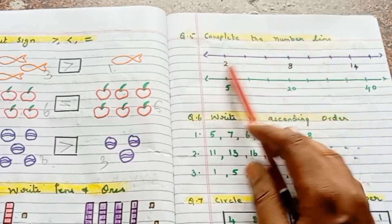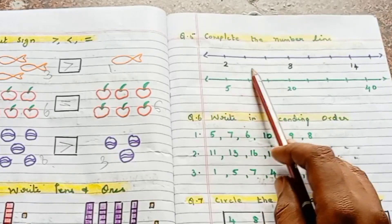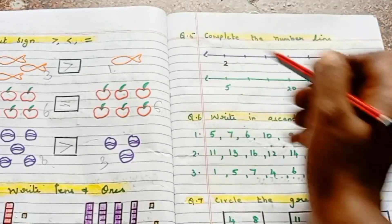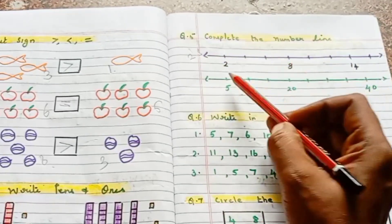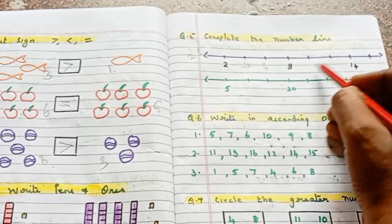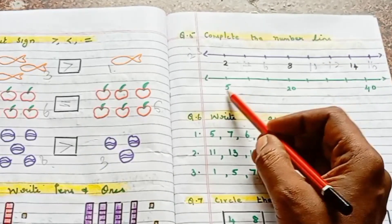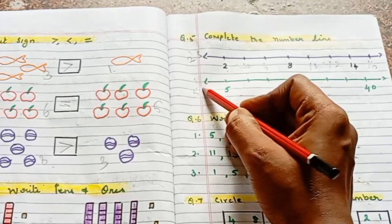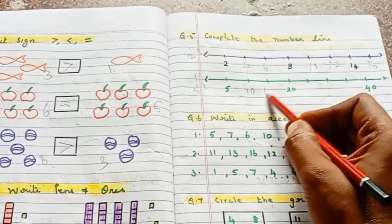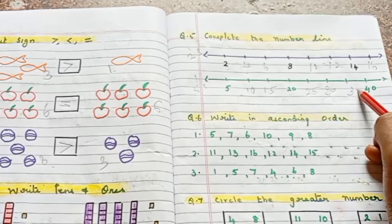Next question: Complete the number line — skip counting. Some numbers are missing on the number line. First scale: skip counting of 2 — 2, 4, 6, 8, 10, 12, 14, 16. Next: skip counting of 5 — 5, 10, 15, 20, 25, 30, 35, 40.